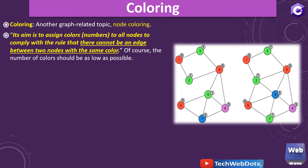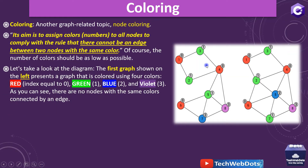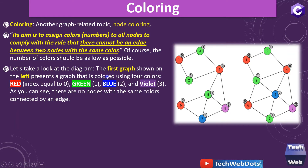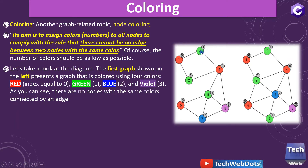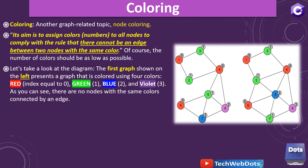Of course the number of colors should be as low as possible. As you can see on the screen on the left side there's a graph, and in that we are using different colors — red, green, purple, and blue. The first graph shown on the left presents a graph colored using four colors. There are no nodes with the same color connected by an edge. There are two nodes with the same color green but they are not connected by an edge — this is the main important point when talking about coloring in a graph.